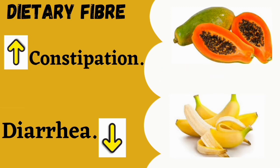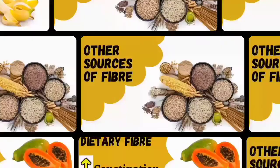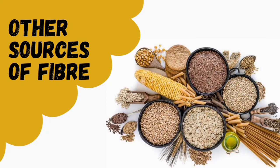For diarrhea, watch out with fiber — insoluble fiber will actually increase diarrhea. Prefer soluble fiber, which can be found in fruits like bananas. Bananas also have potassium that helps replace what is lost through diarrhea. You should also not ignore other sources of fiber like whole grains, legumes, seeds, nuts, and vegetables, which are good when managing constipation.